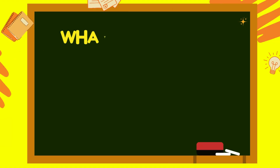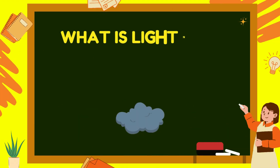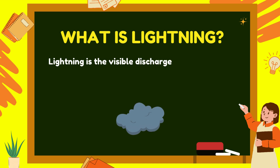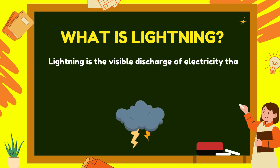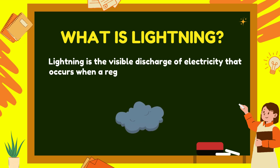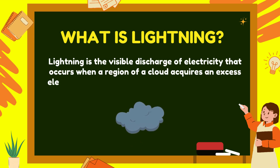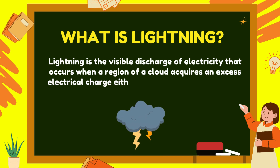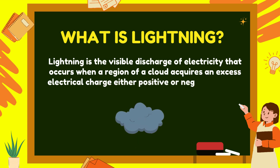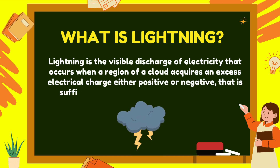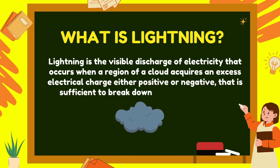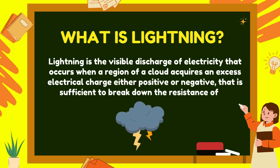What is lightning? Lightning is the visible discharge of electricity that occurs when a region of a cloud acquires an excess electrical charge, either positive or negative, that is sufficient to break down the resistance of air.